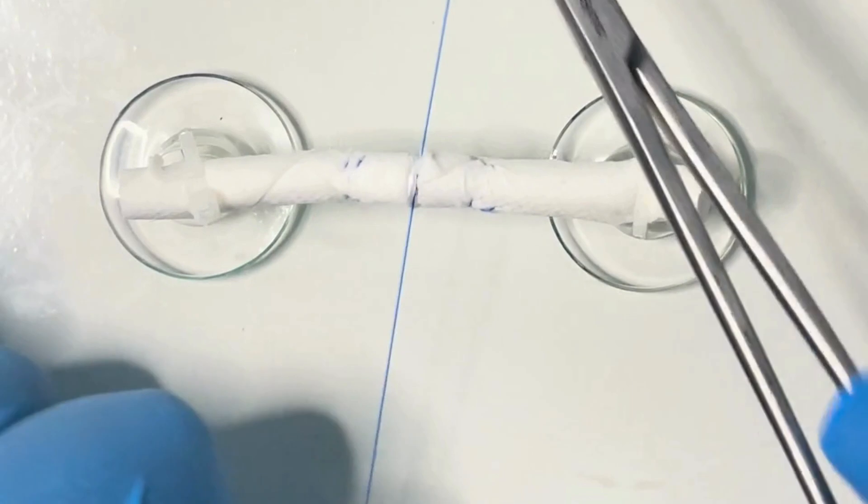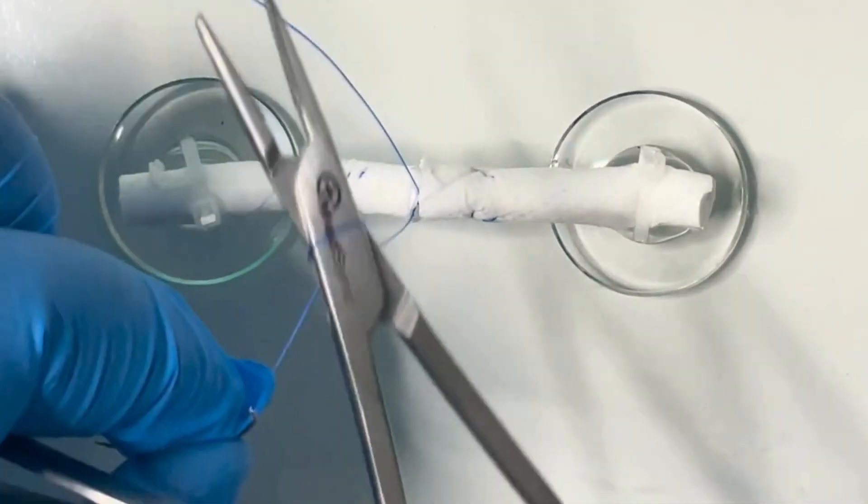As this is a monofilament suture, you need to tie between four and six knots.